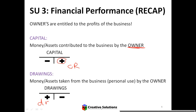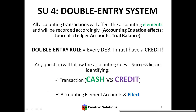Now we're going to apply the double entry system. Transactions will have two sides — a debit and a credit — and two accounts will be affected. It can be the same account, so an asset can go up and then go down. The first step is to identify what the transaction is: cash or credit. If it's cash, it will affect the bank account.